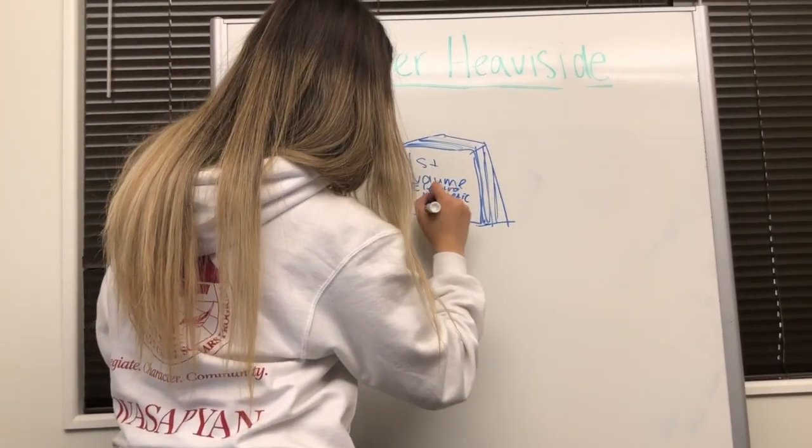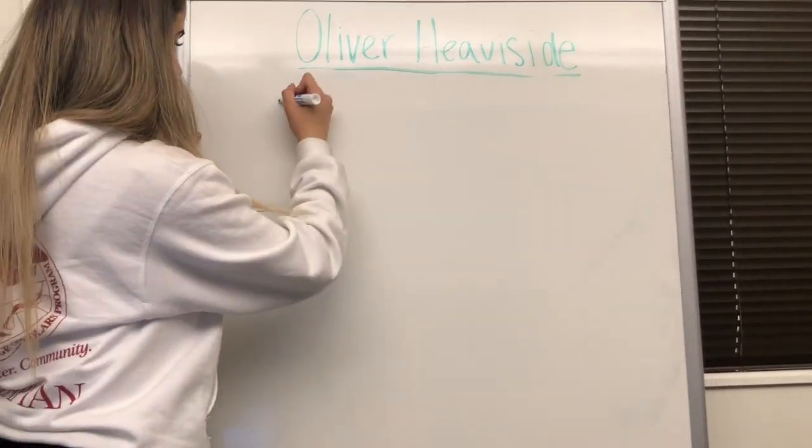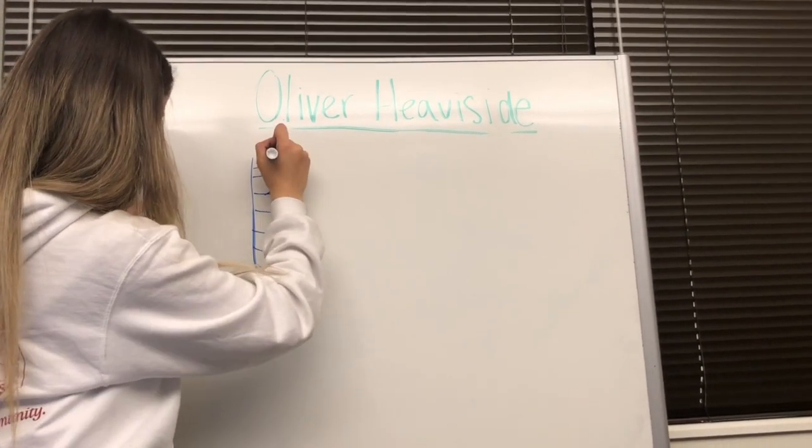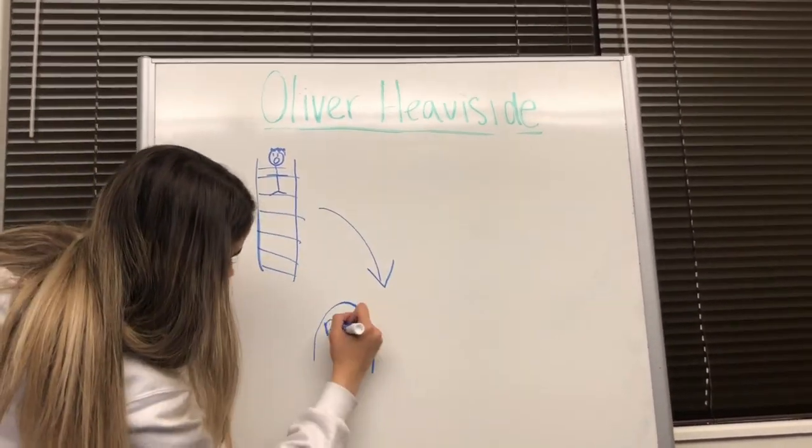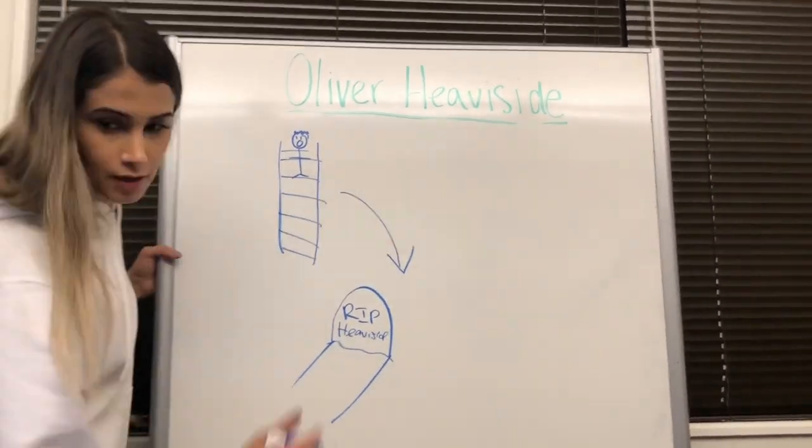The first volume of his work, Electromagnetic Theory, was published in 1893. Heaviside died on February 3, 1925, after falling off a ladder.